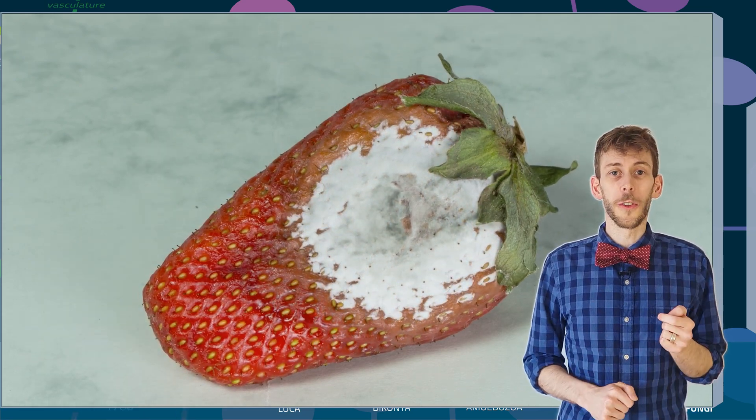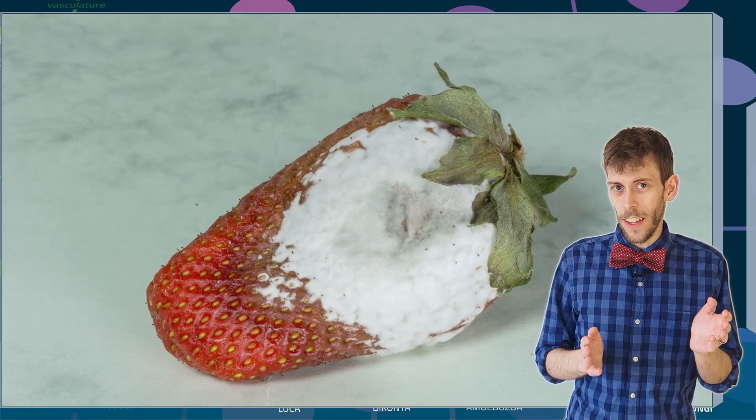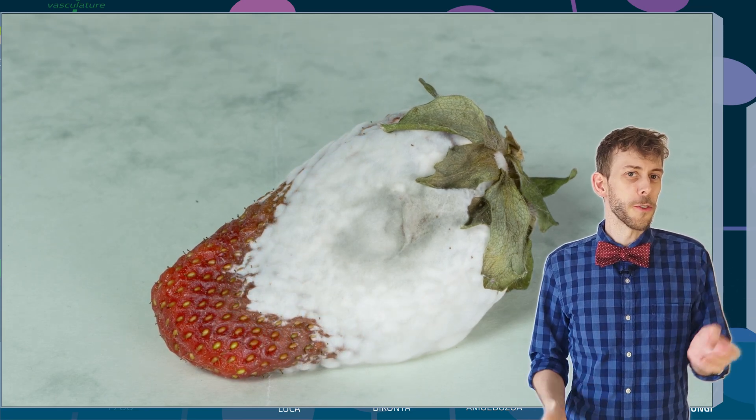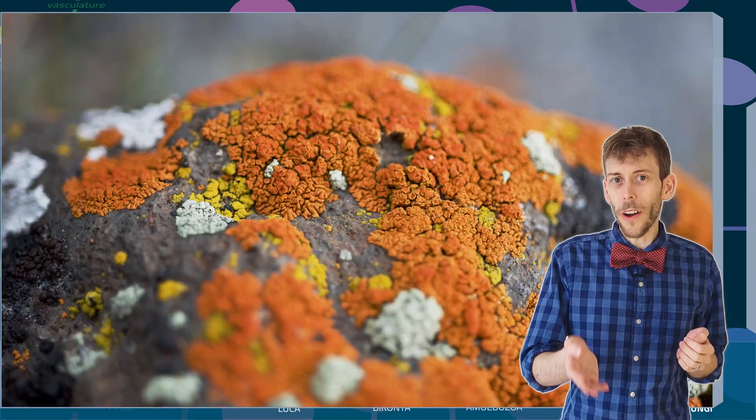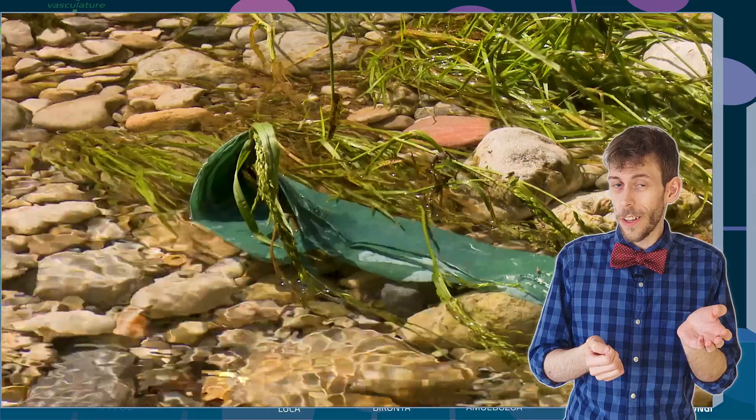And there are fungi that eat kerosene and grow in the fuel tanks of airplanes. And in general, fungi can of course also decompose everything and live on dead material of all sorts, like wood, or even rock, or crude oil, or even plastic.